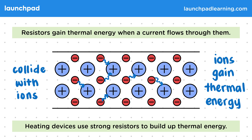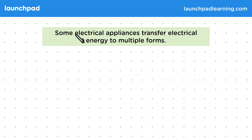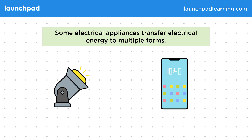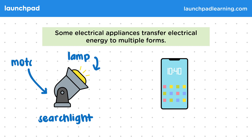So can an appliance only transfer electricity to one other form of energy? Some electrical appliances transfer electrical energy to multiple forms. For example, in a searchlight, energy is transferred into light for the lamp, but also into kinetic energy for the motor. This allows the light to reposition remotely.